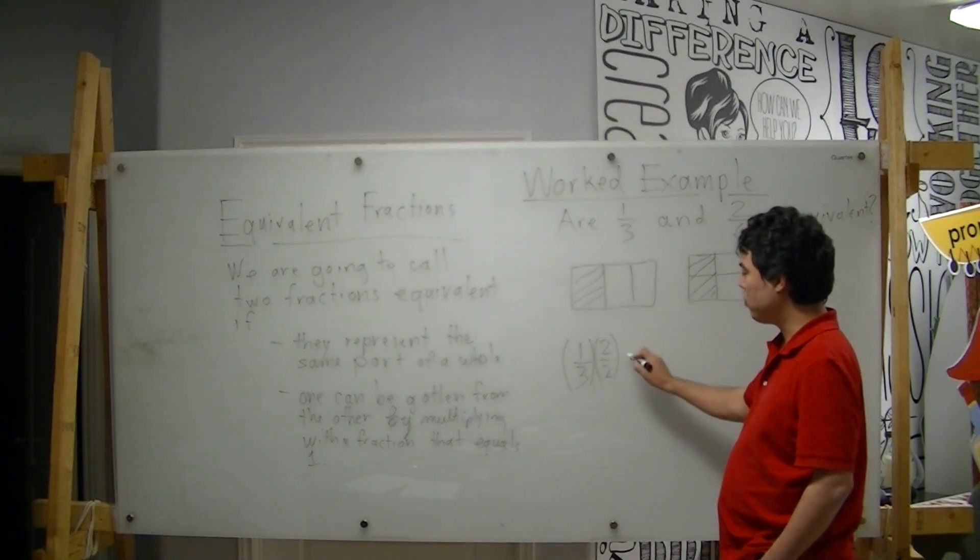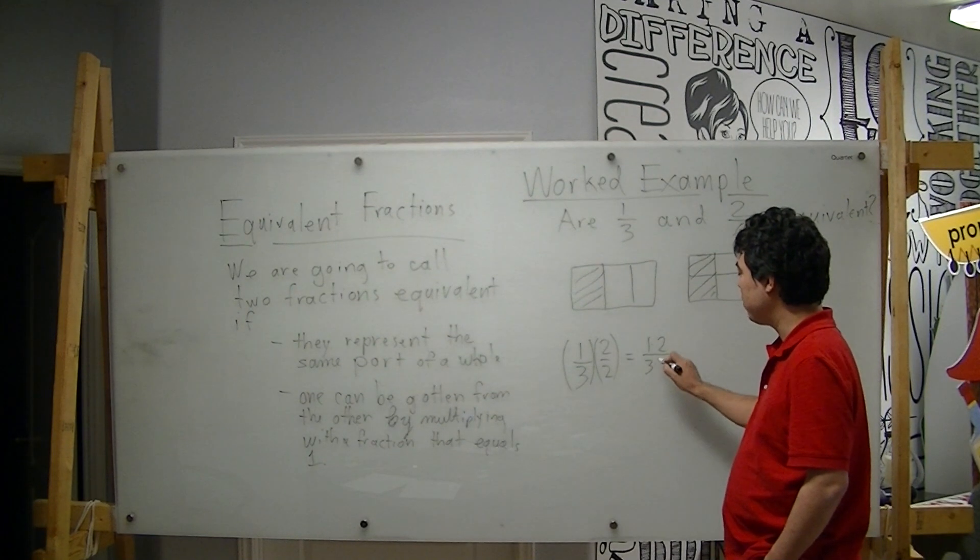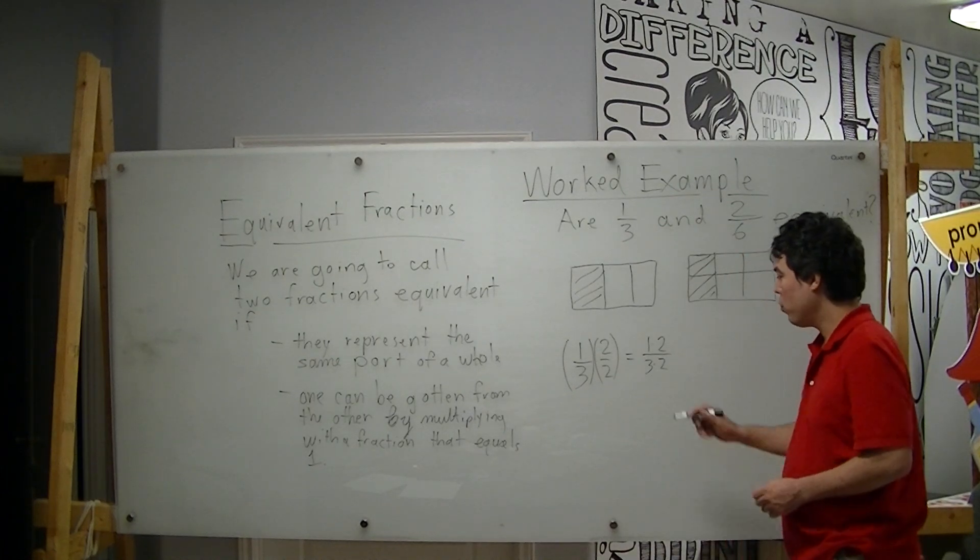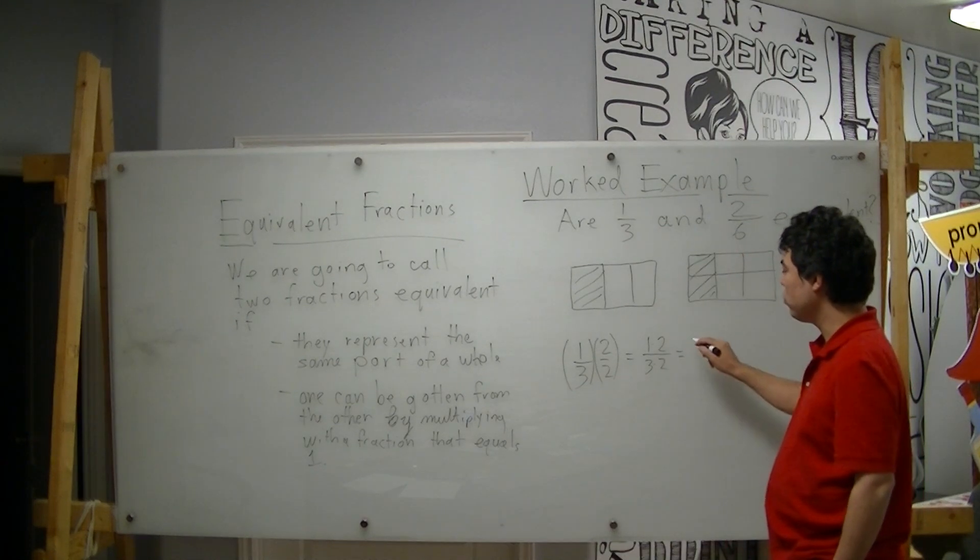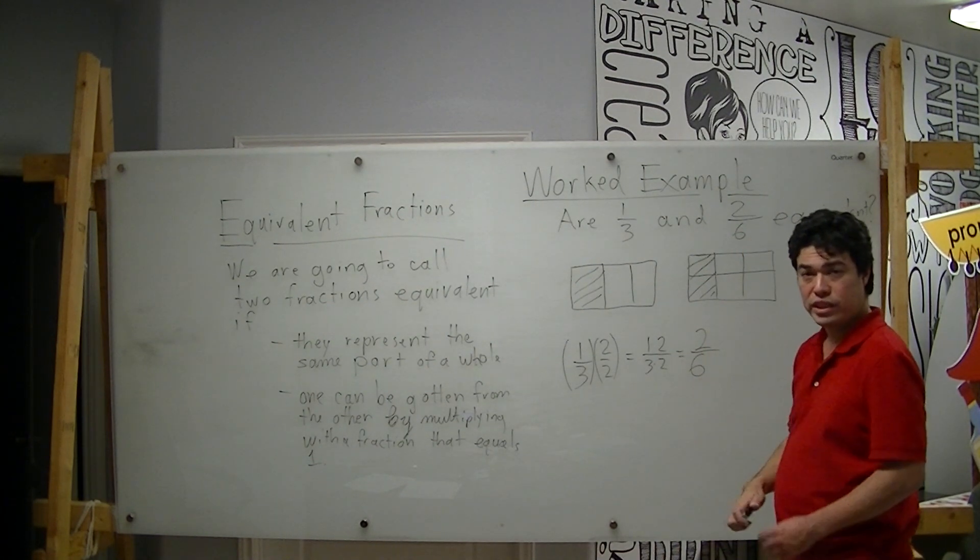If I carry out this multiplication, I get one times two in the numerator, three times two in the denominator, which, when I multiply, one times two is two, three times two is six, and I get this fraction, two over six.